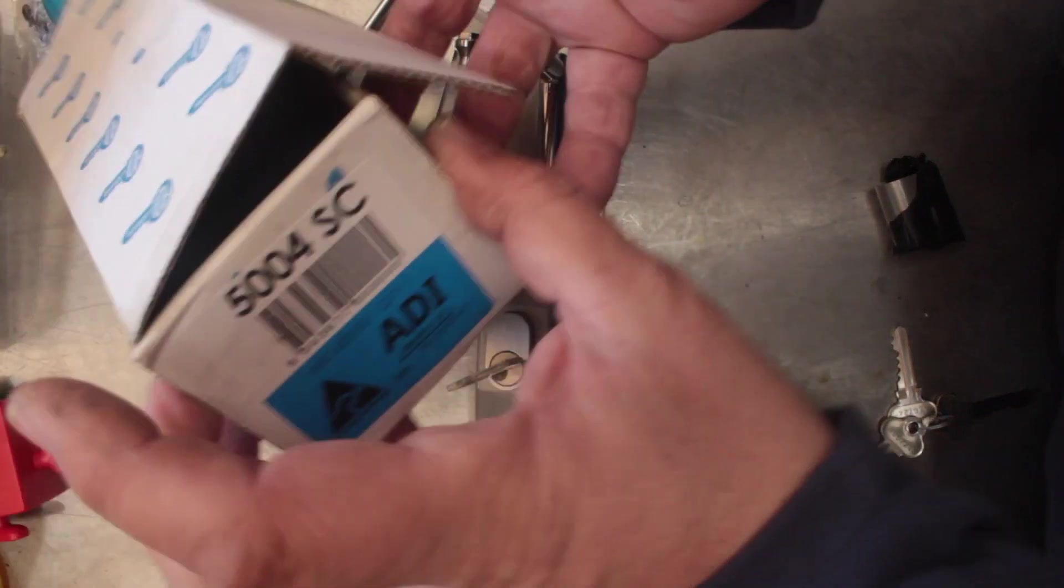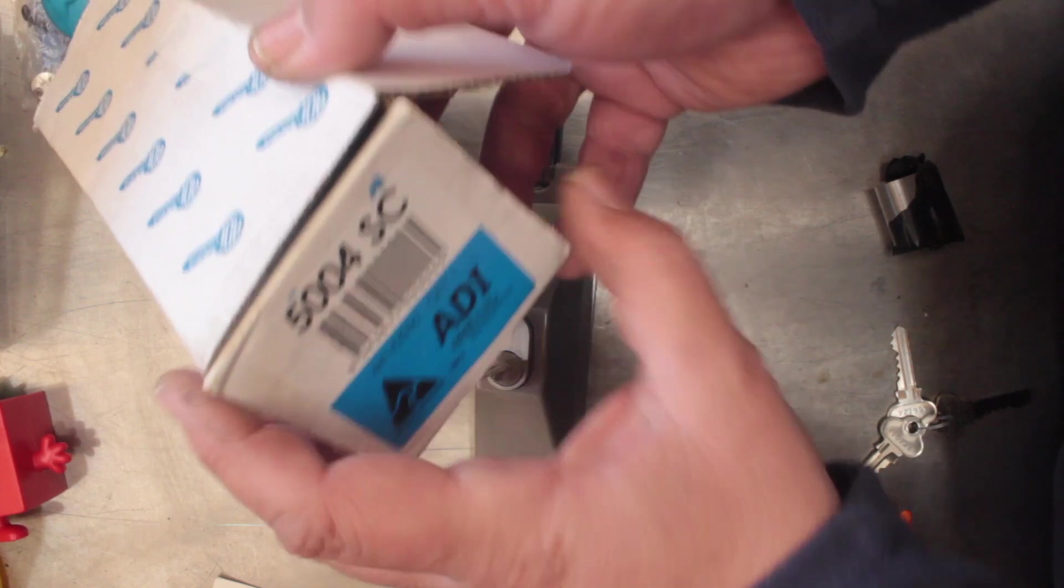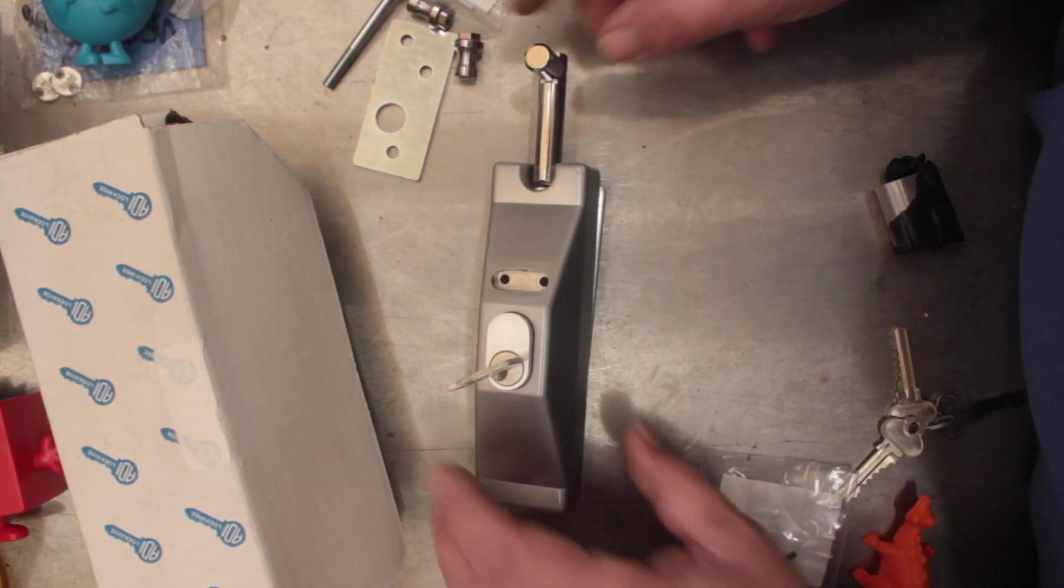Welcome to another video from Dr. Lock. On the bench is the ADI 5004SC, and I'm going to show you how to take the cylinder out and how to rekey it.